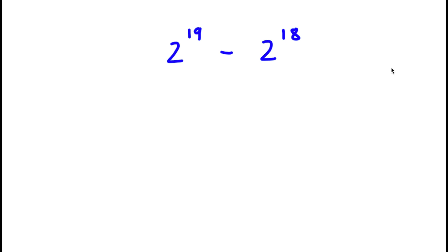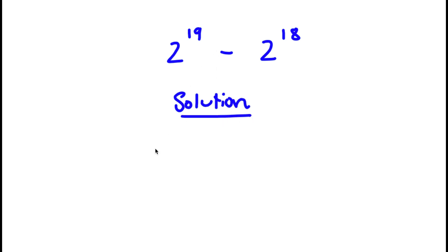In this problem, I have 2 to the power of 19 minus 2 to the power of 18. So for my solution, I'll first start with 2 to the power of 19 minus 2 to the power of 18.